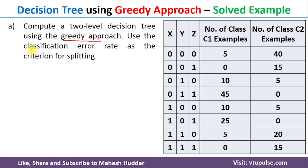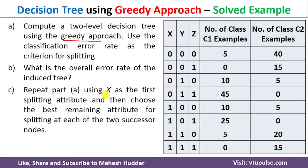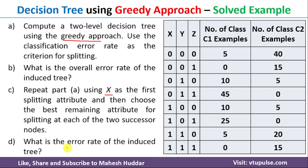We need to use classification error rate as the criteria for identifying the splitting attribute. Once you build the decision tree, we need to find the overall error rate of that particular tree. Then we need to consider X as the root node and build the tree, and again find the overall error rate of that particular tree.